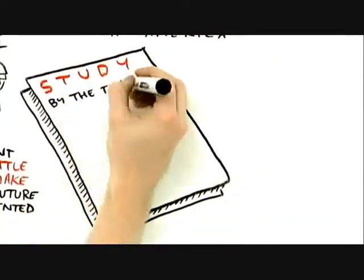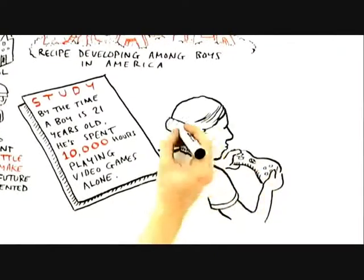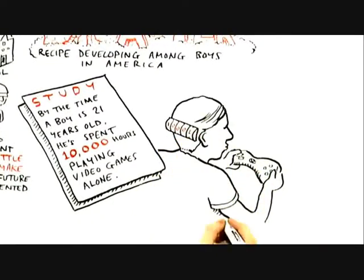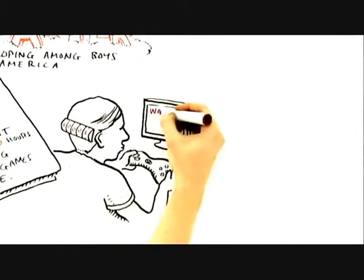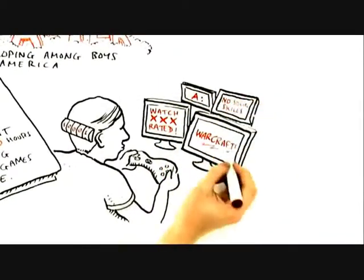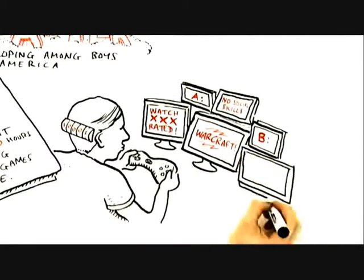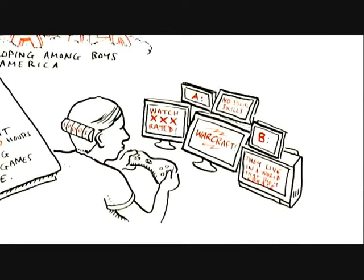One of the problems is, a recent study shows that by the time a boy is 21, he has spent at least 10,000 hours playing video games alone, probably more watching pornography alone. And you put that together, it means they haven't learned social skills, emotional, social intelligence, but also it means that they live in a world that they create.